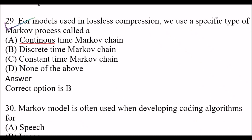Next question: For models used in lossless compression, we use a specific type of Markov process called a — Option A: continuous time Markov chain. Option D: none of the above. The right answer is option B, discrete time Markov chain. For models used in lossless compression, we use a specific type of Markov process called a discrete time Markov chain.